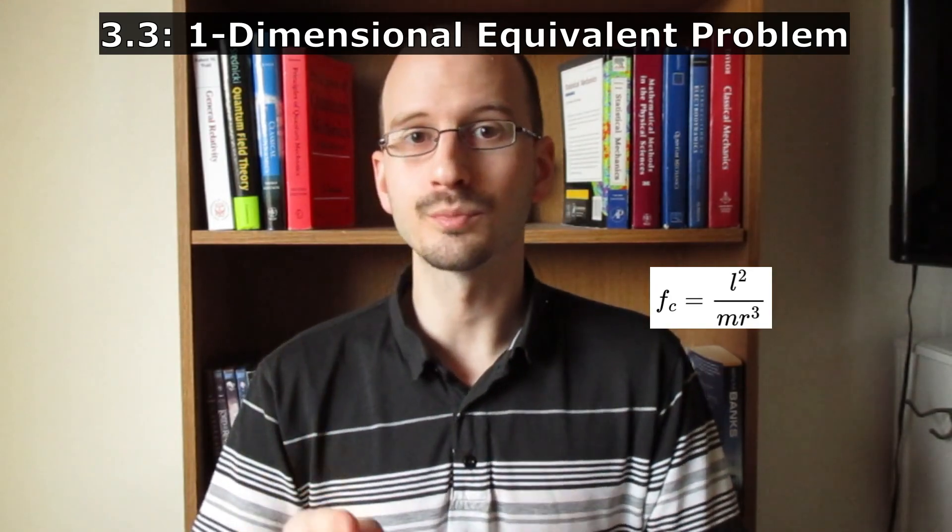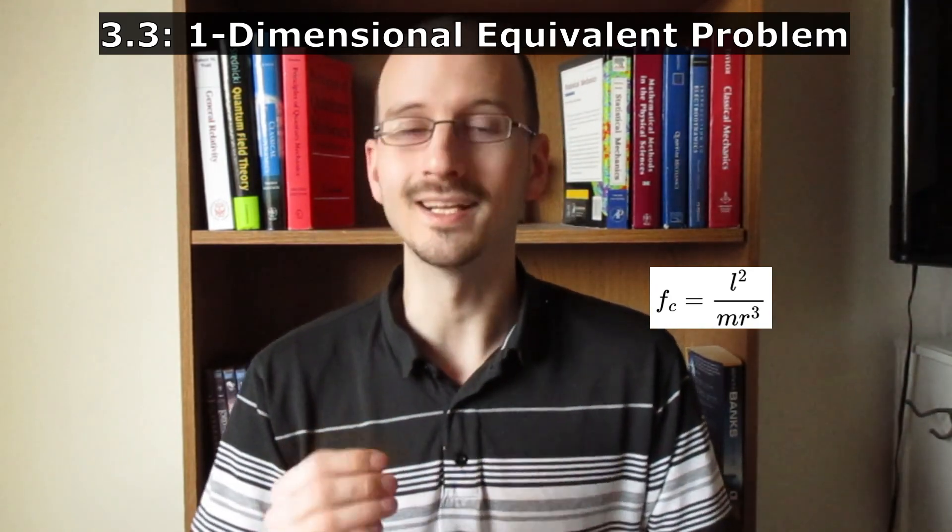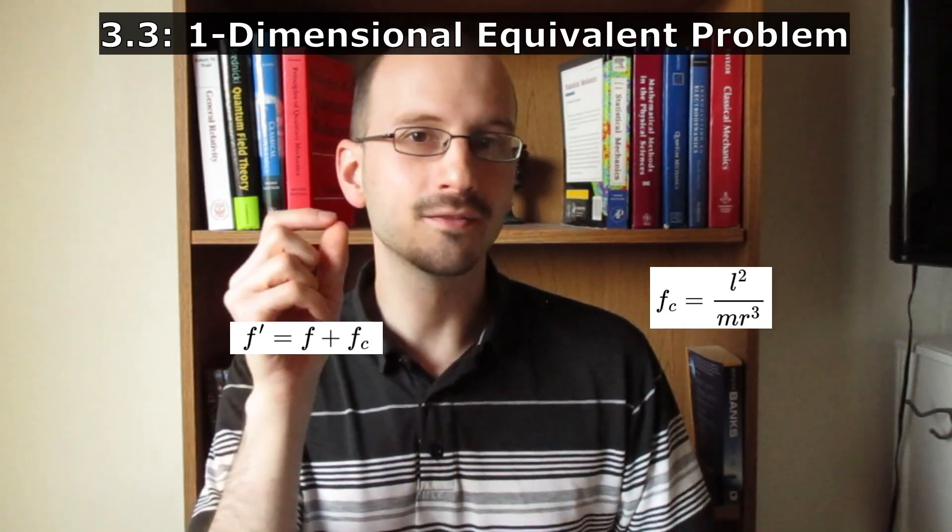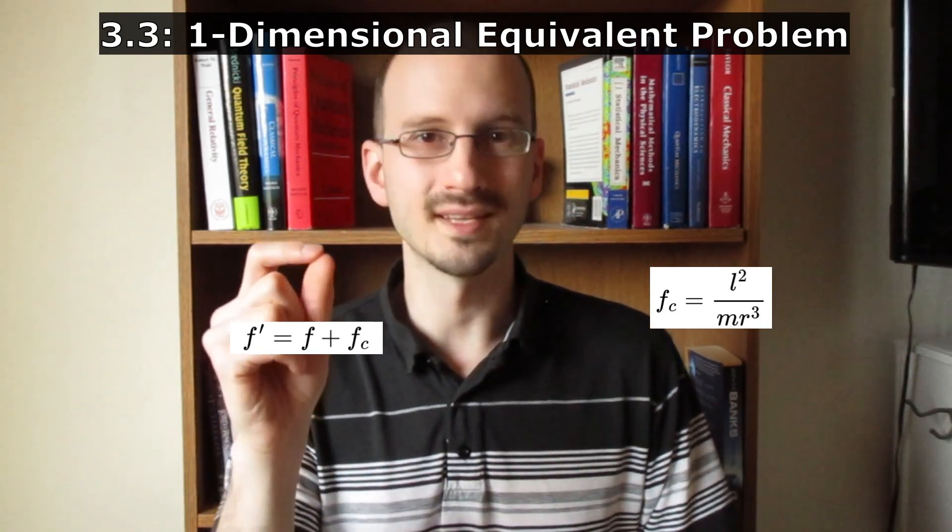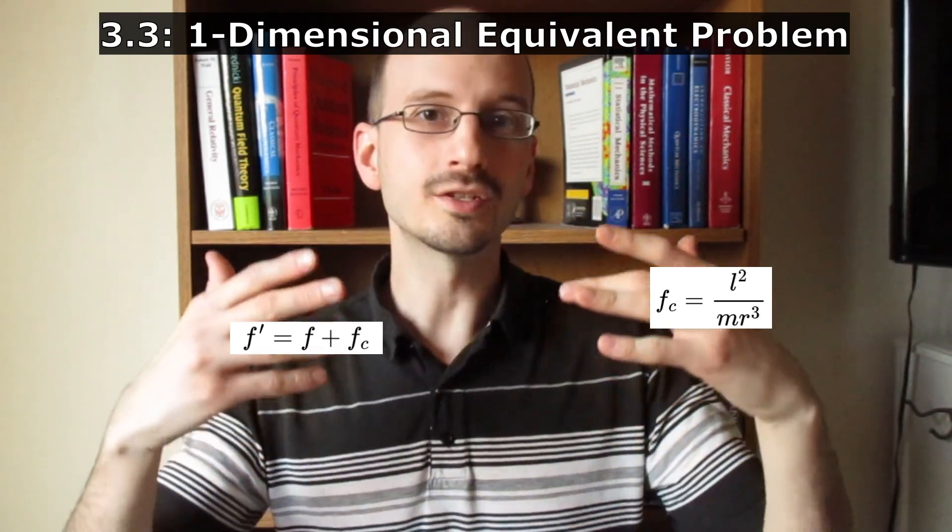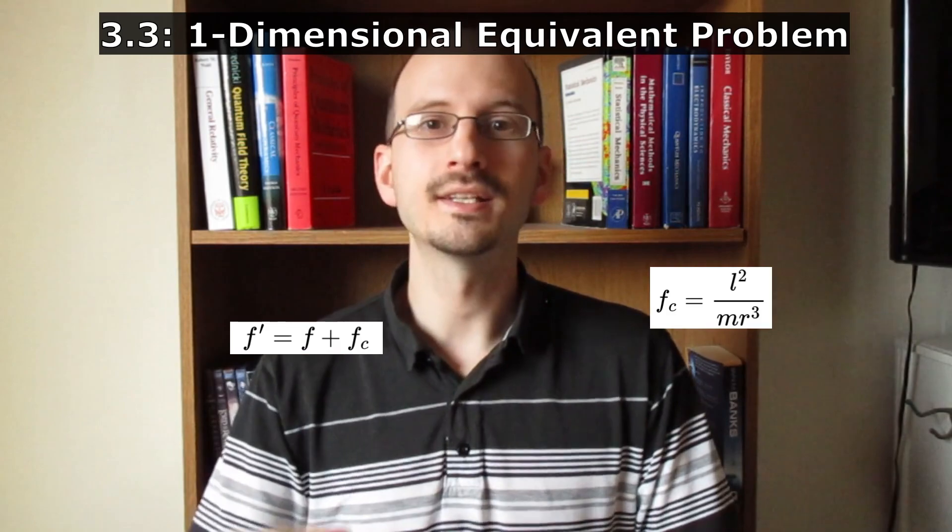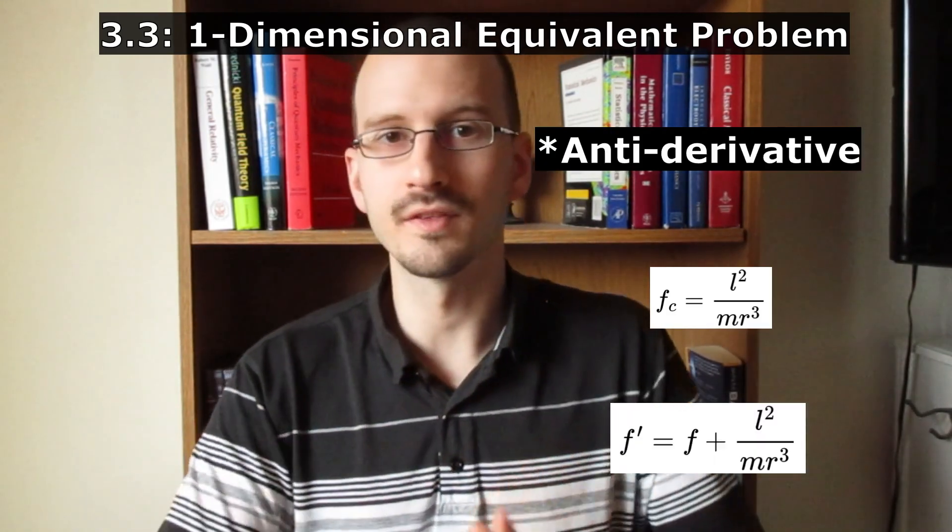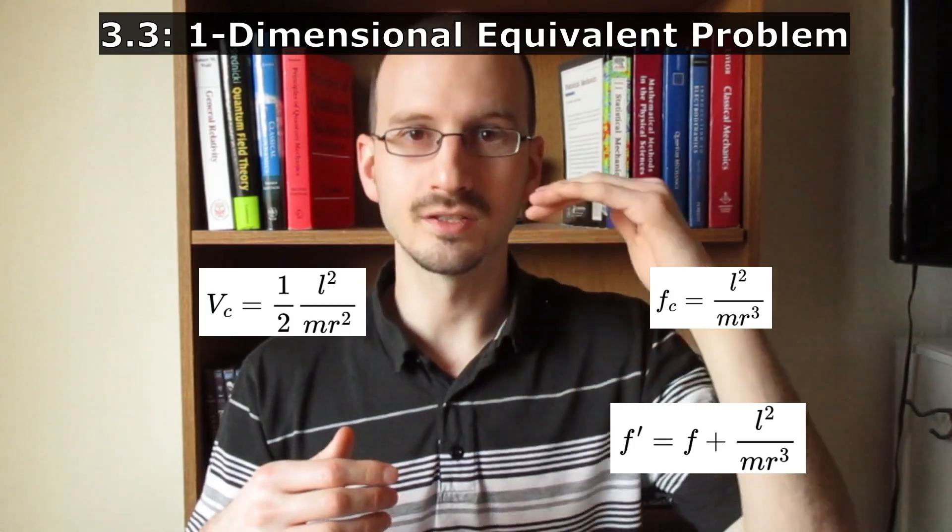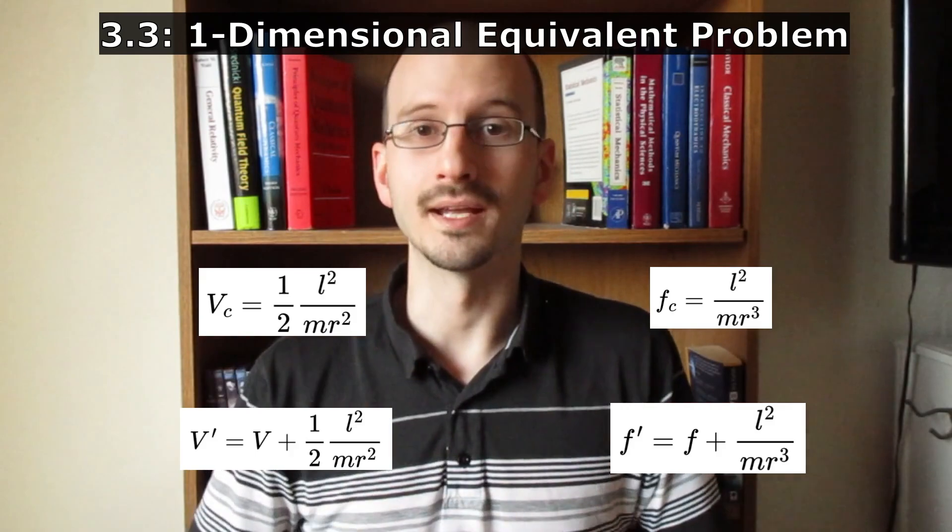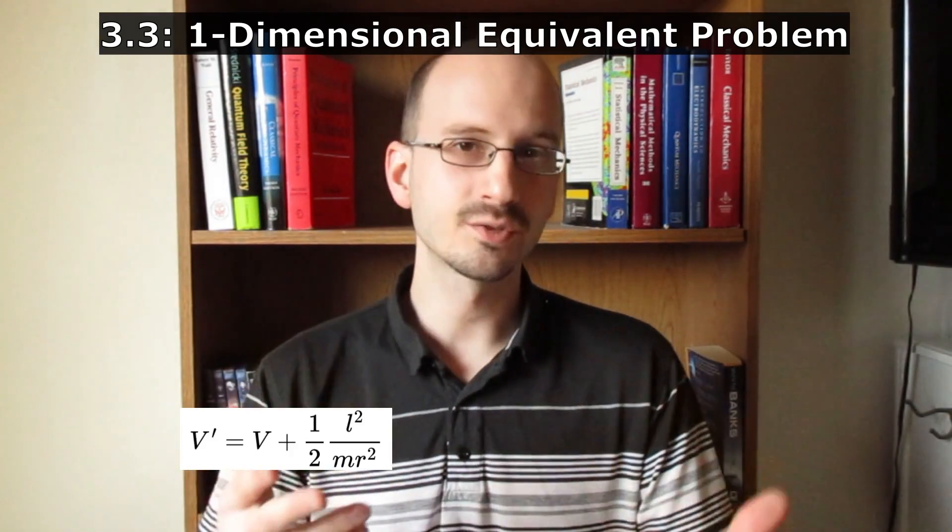So to analyze a central force problem in one dimension only, the r dimension, we have two components to the force. We have the attraction or repulsion from the central source and we have the centrifugal force. These two components add together to give us an effective force. And if we take the derivative of the centrifugal force, we get a centrifugal component to the potential, which we can add to make an effective potential.